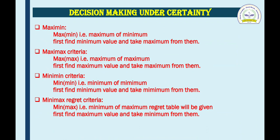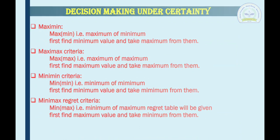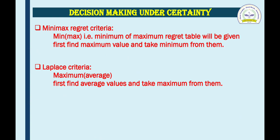Number two: Maximax. In the Maximax criteria, it consists of two words: the first is Max and the second is also Max. We keep the second word in brackets — it is Maximum of Maximum. Third: Minimin. In the Minimin criteria, it also consists of two words, both Min — Minimum of Minimum. For Minimax regret, we will use a regret table; if not provided, we will construct it. Laplace criteria is nothing but the average of all the actions — first we find the average, then we find the maximum value.